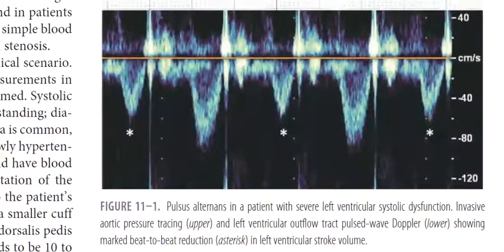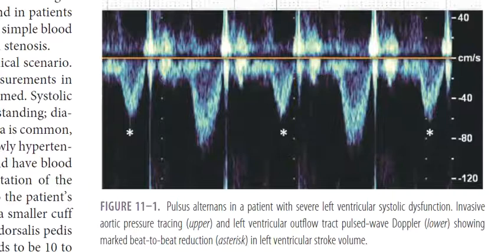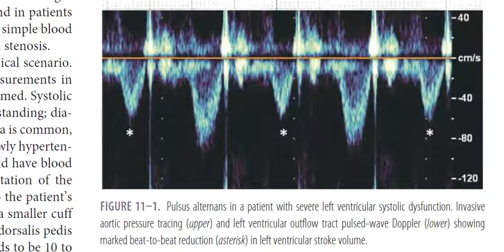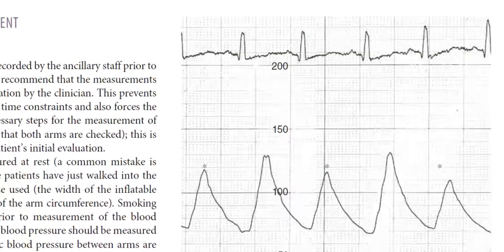This figure shows pulsus alternans in a patient with severe left ventricular systolic dysfunction — invasive aortic pressure tracing and left ventricular outflow tract pulsed wave Doppler showing marked beat-to-beat reduction in left ventricular stroke volume.